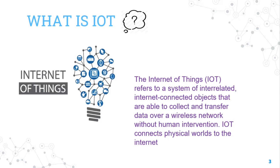But now, due to the advancement of technology, we are also able to connect our devices to the Internet and share information and data with devices. Devices that can sense or read the values of the surrounding environment can be connected. Such a combination of devices connected to the Internet is known as IoT. We need a wireless network to connect IoT, and without any human interference, IoT connects the physical world to the Internet.